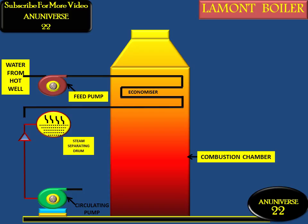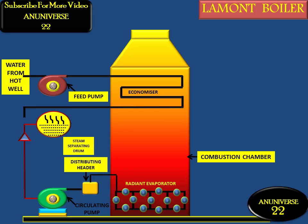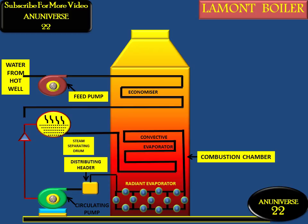This centrifugal pump is driven by a steam turbine, and steam for the turbine is taken from the boiler itself. This is the distributing header, which applies water to the evaporator tubes or water tubes. These evaporator tubes are connected with the steam separating drum.